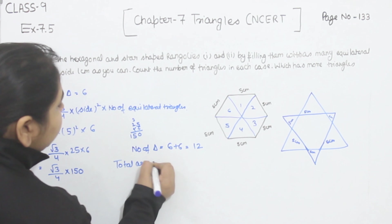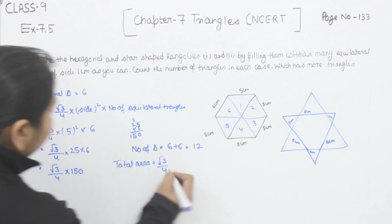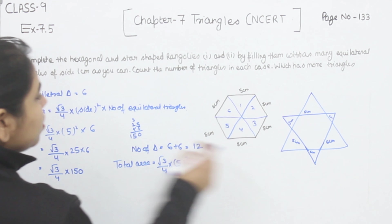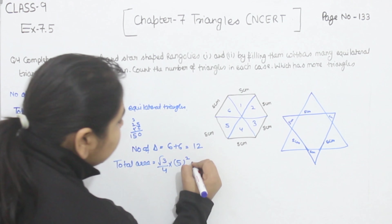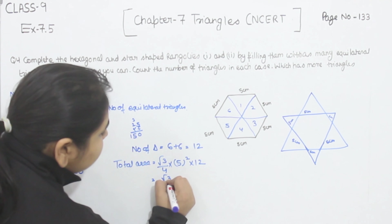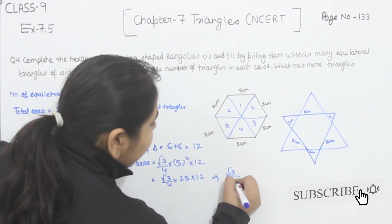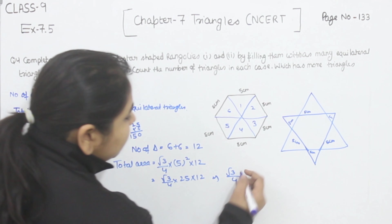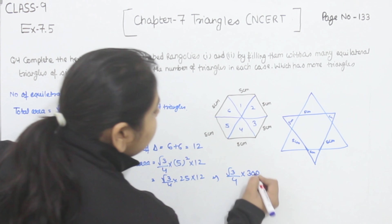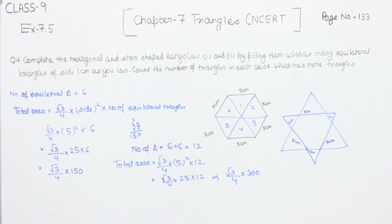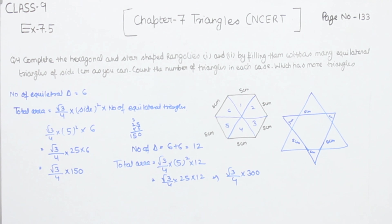The total area of the star shape is equal to root 3 by 4 multiplied by side squared. The side is again 5 cm and the number of equilateral triangles is 12. So root 3 by 4 × 25 × 12 = root 3 by 4 × 300. This is the area of the star-shaped rangoli. Now we have to find out which is having more area.